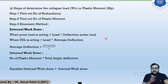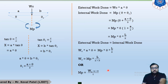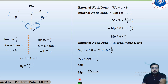In the last lecture we discussed one derivation: finding out the collapse load (denoted by WC) or plastic moment (denoted by MP) for a simply supported beam carrying a concentrated load at a distance small a from the left support. The final answer is WC = MPL divided by AB. And if the plastic moment is asked in your exam, you make MP the subject, giving MP = WC·AB.